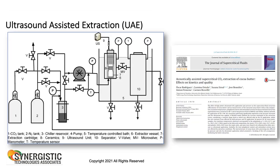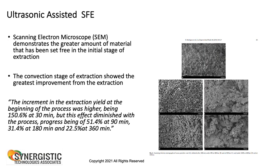Another approach is ultrasound-assisted extraction, where you use ultrasound before the extraction process to break open the trichomes. Each one of these allows greater use of kinetics and retrieving different compounds faster because you've made them more amenable. This picture from a scanning electron microscope shows the effect of opening up trichomes—you see the original cells and the broken-open cells, demonstrating a greater extraction capability.